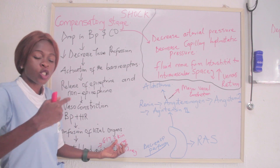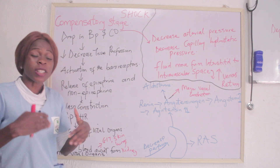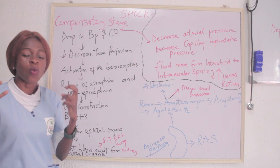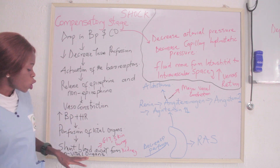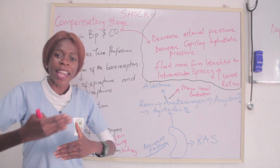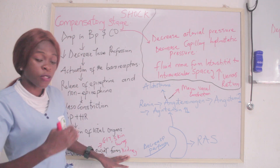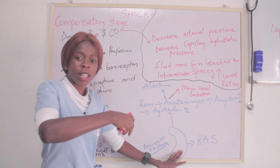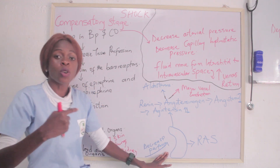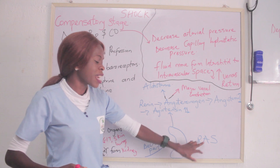There is also going to be decreased blood flow to the kidney. When this happens, the kidney has its own way of working in this compensatory stage. The decreased flow makes the kidney less perfused, and when the kidney senses this, there is activation of the RAS system — the renin-angiotensin-aldosterone system.